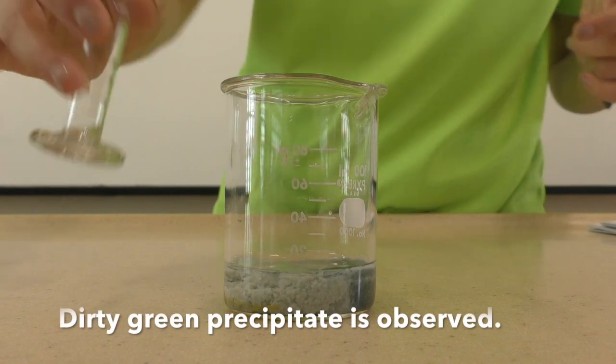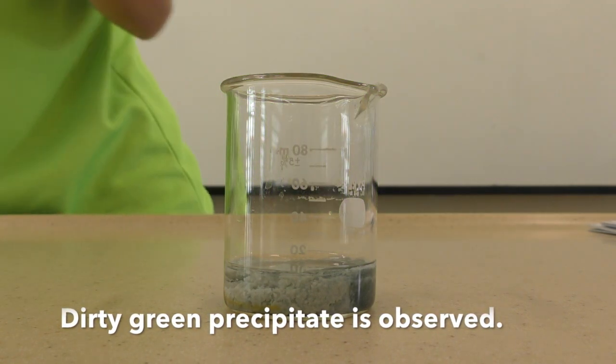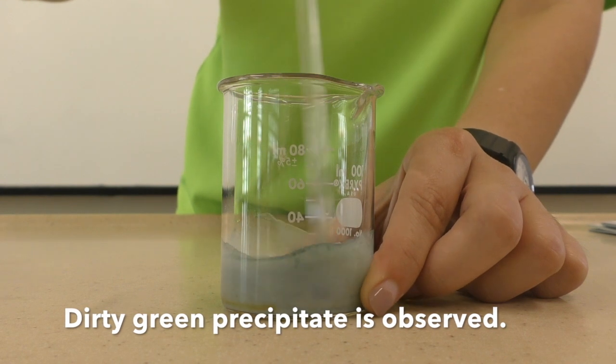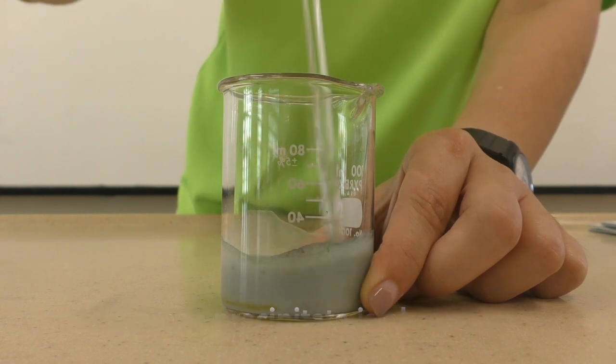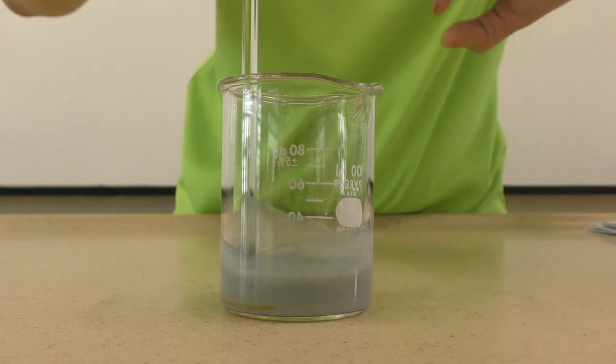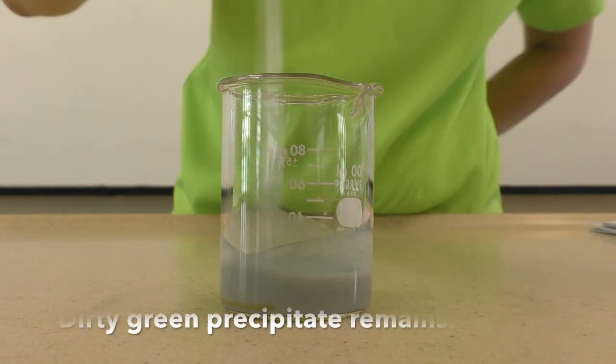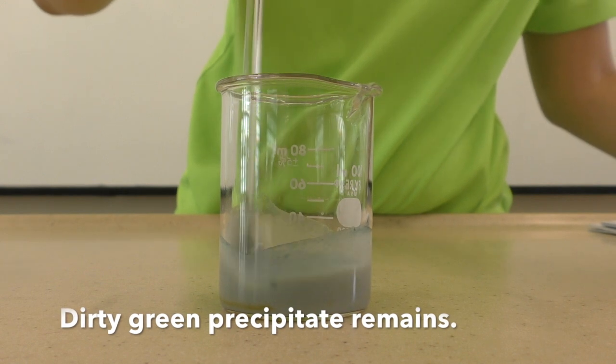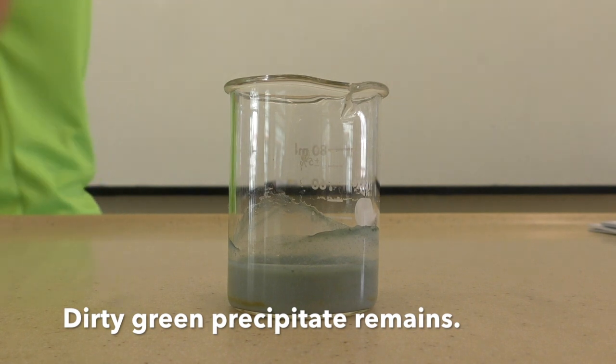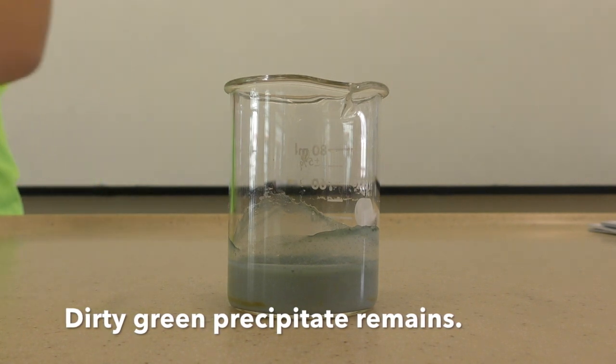Take note of any observation. Dirty green precipitate is formed. Stir the mixture thoroughly. Dirty green precipitate remains. Observe the contents of the beaker for about 1 minute.